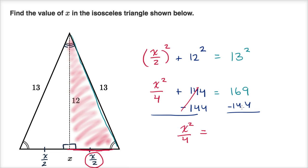69 minus 44 is 25, so this is going to be equal to 25. We can multiply both sides by four to isolate the x squared. And so we get x squared is equal to 25 times four, which is equal to 100.